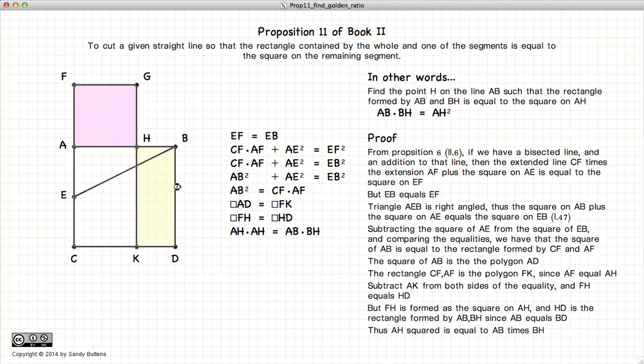And thus we have that AH squared is equal to AB times BH, which is what we were trying to do in the first place. So thus we have demonstrated how to construct or find the point H such that this equality is true.